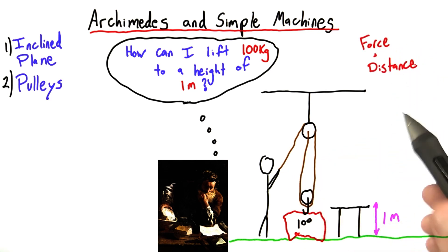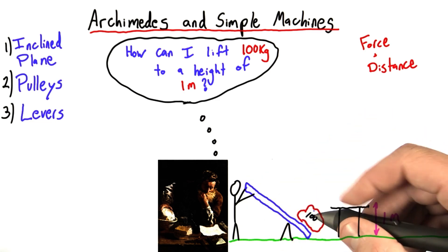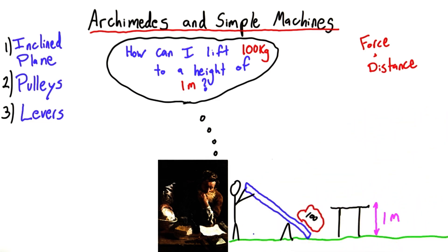Once again, we see this force and distance tradeoff popping up. Another simple machine that could help us out is the lever. If we use a lever, we can exert a smaller force than we would have to if we were just picking it up. But once again, we'll have to exert it over a greater distance, just to lift this rock 1 meter.